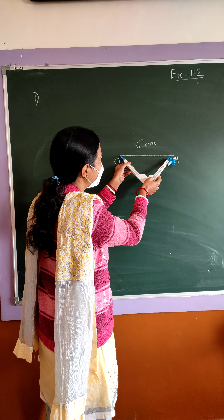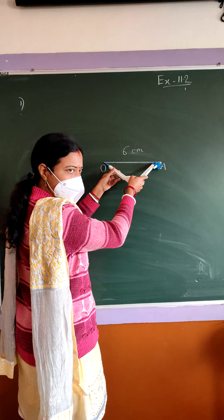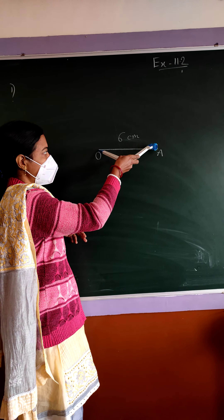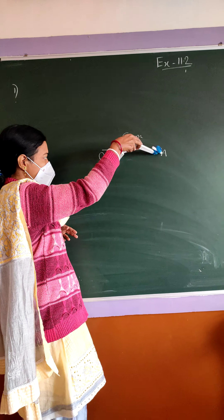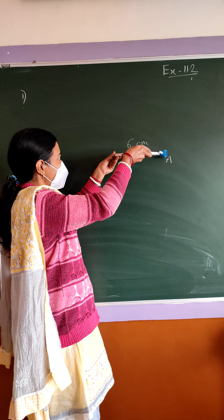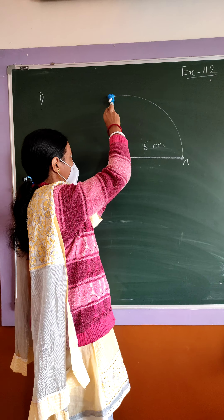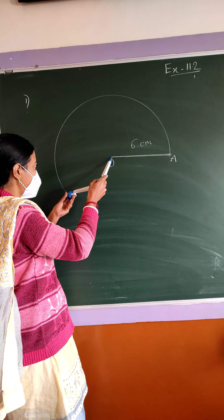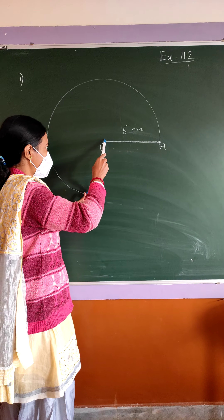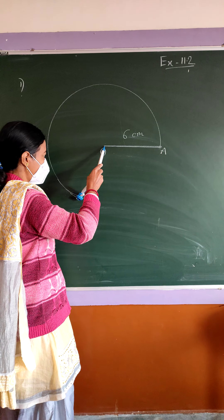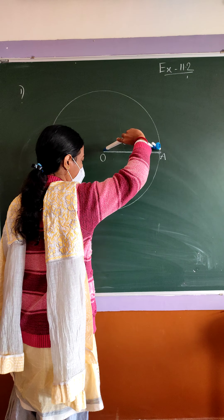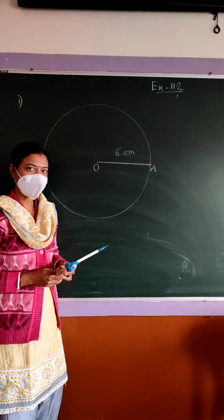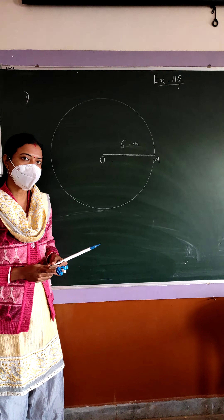Place the compass at the center, making sure the point is in the middle. Draw a circle having radius 6 centimeters.